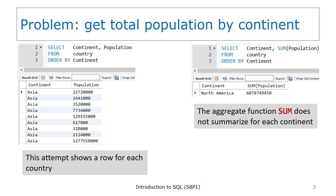The reason for showing the SELECT statement on the left is so that you can see the data that is available. It seems like it should be a simple matter to add up all of the populations for each continent. So using the SUM function that we learned about in the previous session, we write the SELECT statement shown on the right, using the same continent and population data, but applying the SUM aggregate function on the population column. The results are not at all what we wanted. Instead of getting back a list of continents and the total population of the continent, we get the grand total of the population of all countries in the country table. The continent value shown in the result is meaningless — the SUM is applied over all rows in the table. The population of North America is not over 6 billion people; that was the population of the world at the time the sample database was created.